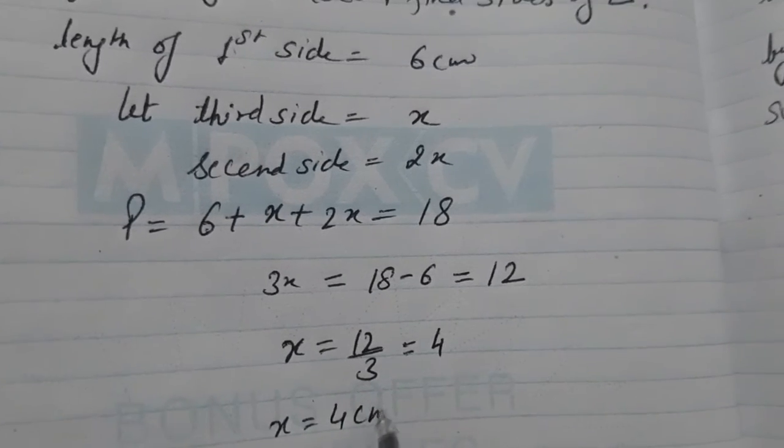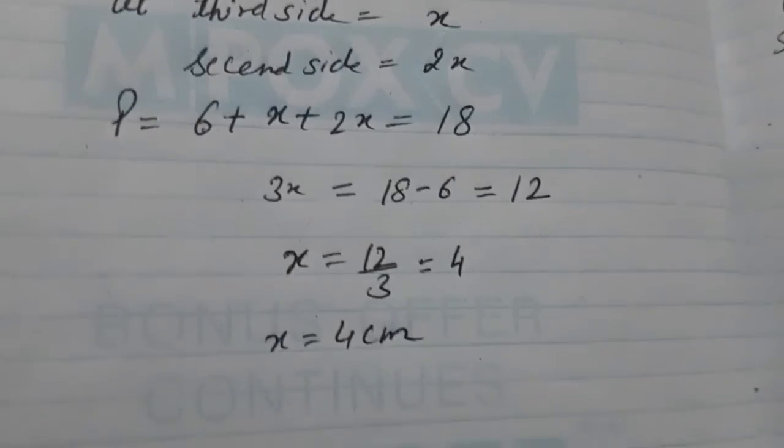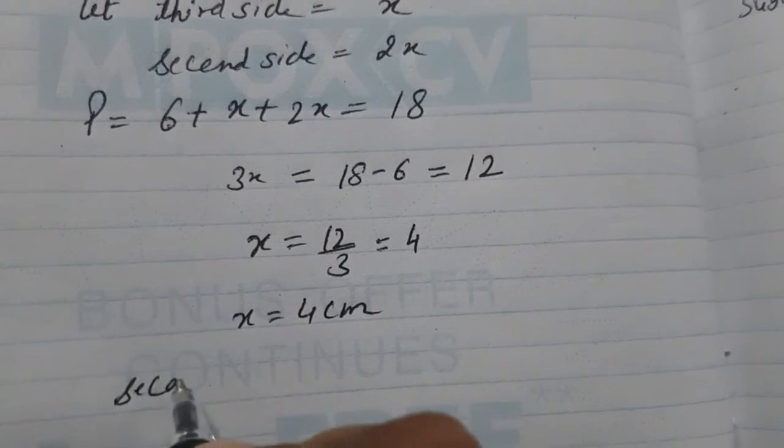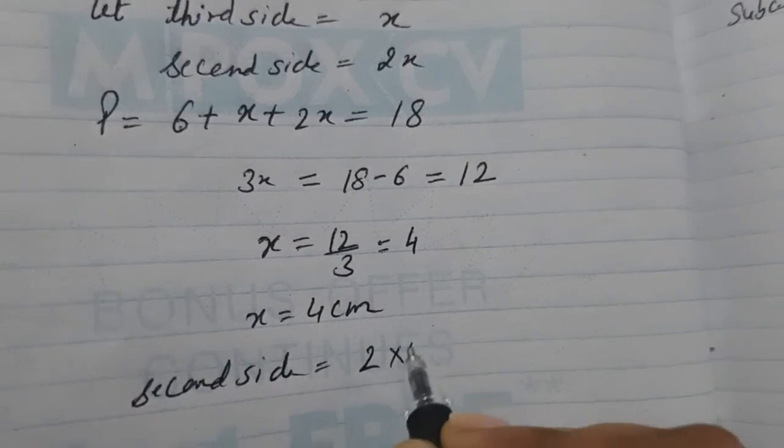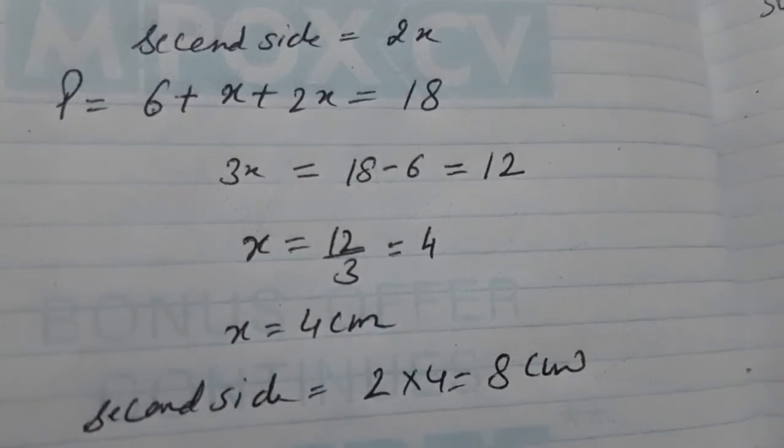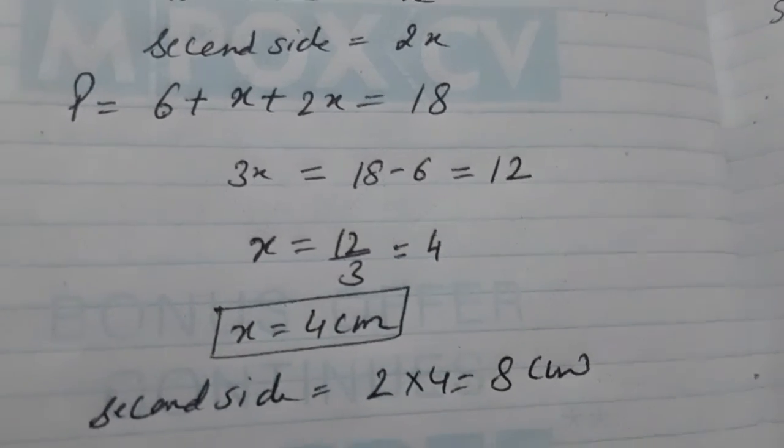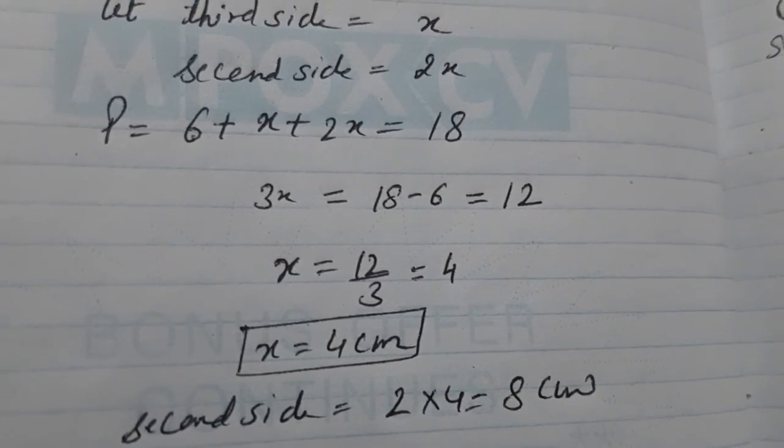So, X will be 4 cm. So, this is the third side. So, second side will be 2 into X, 2 into 4, that is 8 cm. So, these are the two sides. I hope this is clear. Thank you.